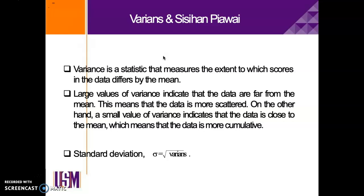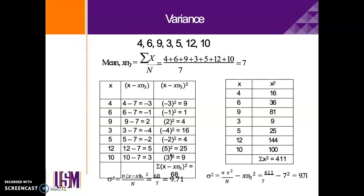To make it simpler: if the standard deviation value is large, it means the data are far from the mean and the data is scattered. If the variance is low, it means the data is close to the mean and more cumulative. To get the standard deviation, you use the variance formula — this is just shown to illustrate how we calculate it, but I'm not going to explain the full calculation in this video.